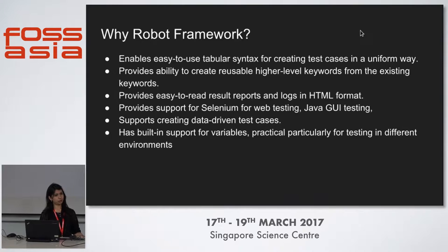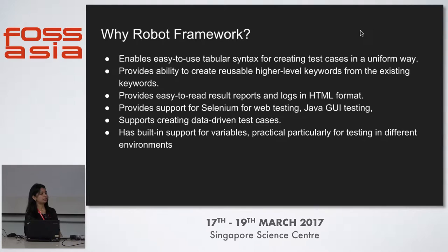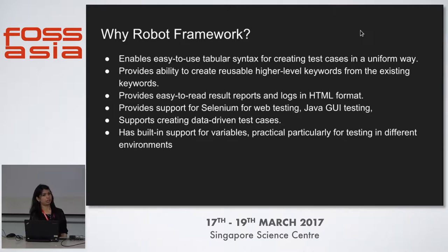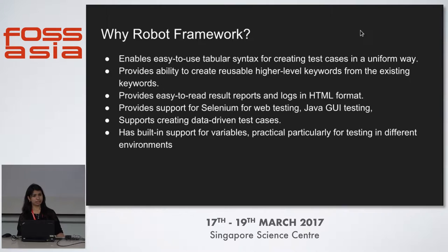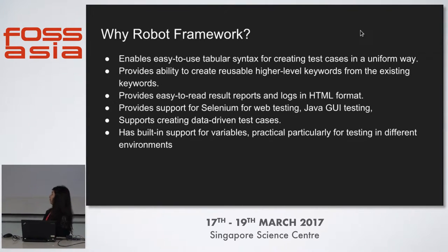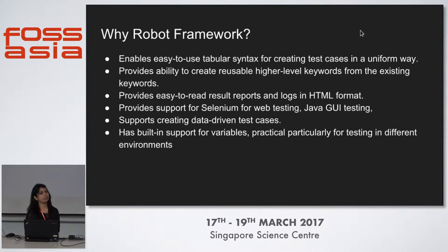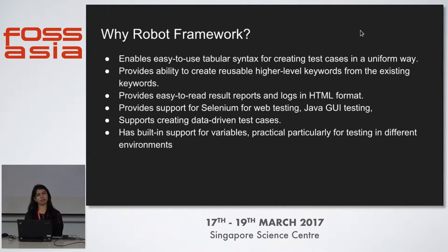When we run the robot framework, we get easy to read reports in HTML format as well as XML format. After execution we get three reports: report.html, output.html, and result.xml. It supports Selenium for web testing, so we can use Selenium libraries for web testing as well as other different libraries. It supports data driven test cases, which use data to drive the testing. And it has built-in support for variables — we can define our own variables and assign them values to use in our test cases.